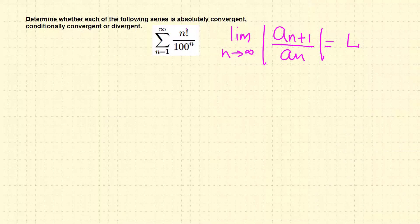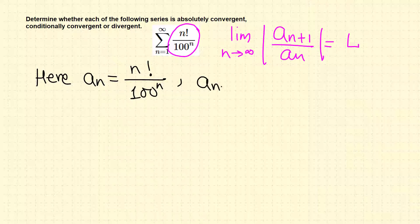Here, what we have is a_n, and a_{n+1} means just replace n by n+1. So a_n is n factorial over 100 raised to n. The next term a_{n+1} would be (n+1) factorial over 100 raised to n+1.